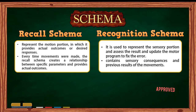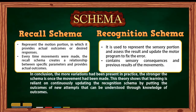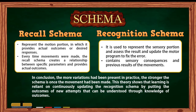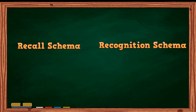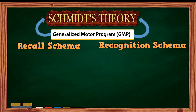The second section contains sensory consequences and previous results of the movements. In conclusion, the more variations present in practice, the stronger the schema is once the movement has been made. This theory shows that learning is reliant on continuously updating the recognition schema by incorporating outcomes of new attempts, understood through knowledge of outcomes. Additionally, recall and recognition schemas lead to the central idea of Schmidt's theory: the generalized motor program, or GMP.